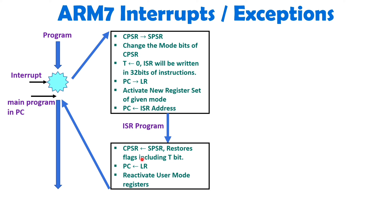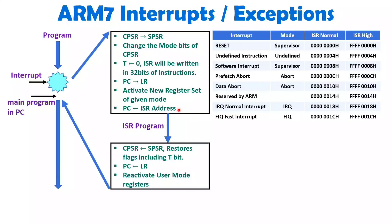Now, as I told you, with each and every interrupt, well-defined ISR addresses are there. With different modes, interrupts are happening. In sequence: Reset is happening with respect to Supervisor mode. Then Undefined Instruction, which is in Undefined mode. Then SWI instruction execution, entering Supervisor mode. After that, Prefetch Abort and Data Abort, happening in Abort mode. Then one address is reserved by ARM. After that, IRQ and FIQ. Addresses start at 0 in normal ISR, and you add 4 bytes each time. That is how addresses are assigned for each interrupt.